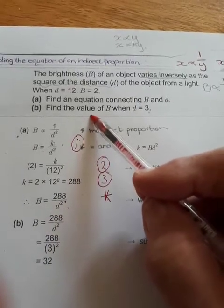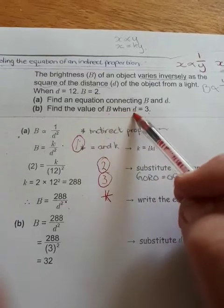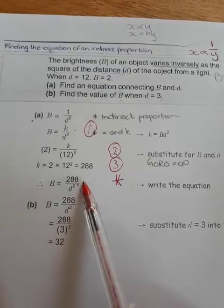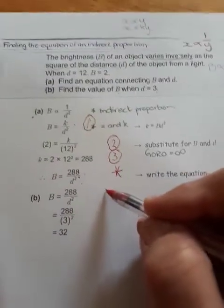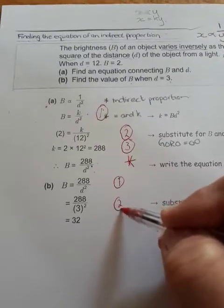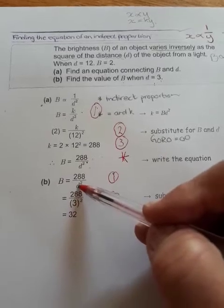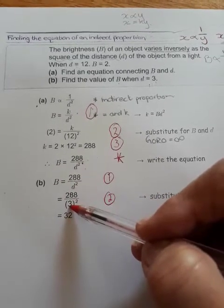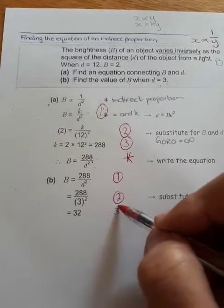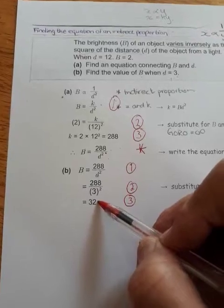For question b, find the value of B, the brightness, when d, the distance, is 3. So instead of d, we substitute 3, and then simply put this into your calculator, calculate, and we get that the brightness will be 32.